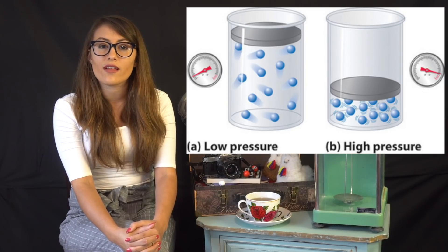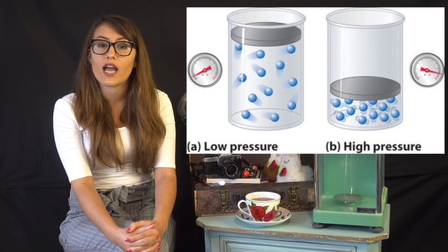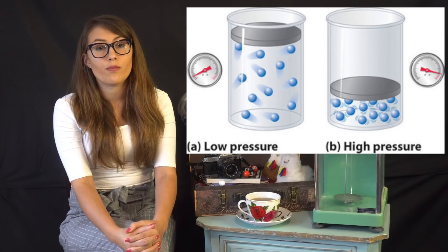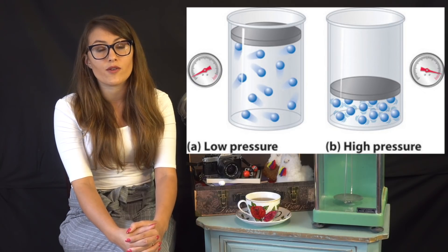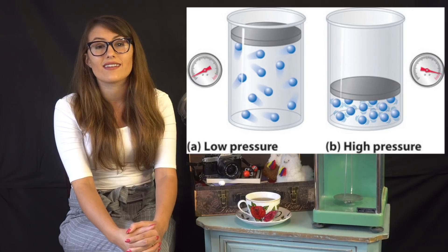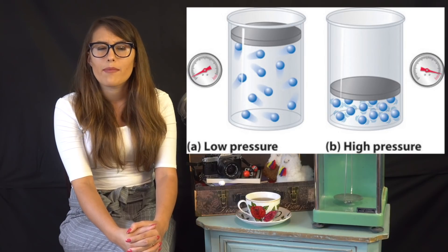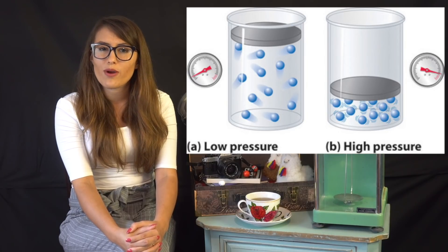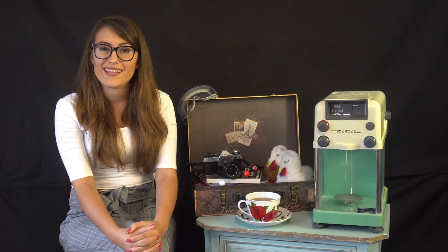If we go back to earlier lessons, ideal gases are assumed to have no volume. At low pressures, the space between gas molecules are so far apart that the volume they occupy is negligible. But as you increase pressure, it becomes more significant.